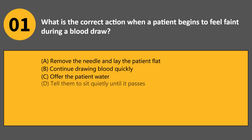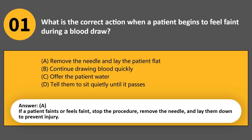What is the correct action when a patient begins to feel faint during a blood draw? A. Remove the needle and lay the patient flat. B. Continue drawing blood quickly. C. Offer the patient water. D. Tell them to sit quietly until it passes. Answer A. If a patient faints or feels faint, stop the procedure, remove the needle, and lay them down to prevent injury.